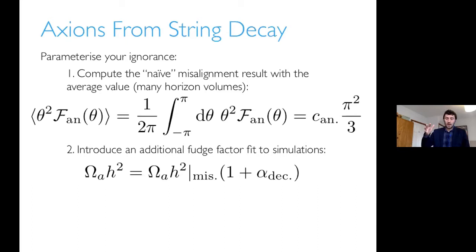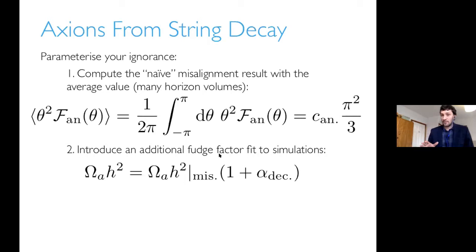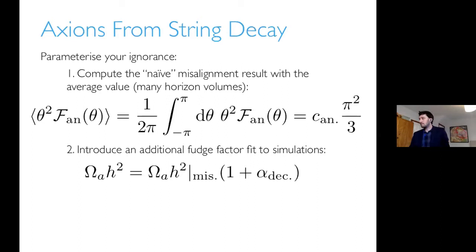From vacuum realignment alone with theta equal to one, the decay constant is about 10 to the 11 or 10 to the 12 GeV. The misalignment contribution here gives theta-squared equal to pi over root three, pushing down to say 10 to the 10 GeV for F, and thus 10 to the minus 4 eV for the axion mass. If alpha_dec is of order 10, we push down the decay constant even more and push up the axion mass even more.